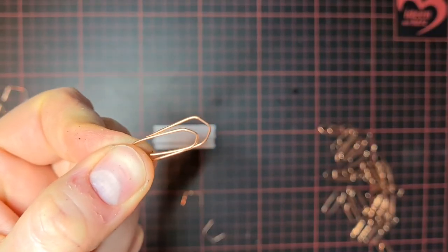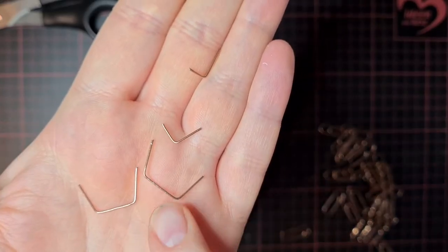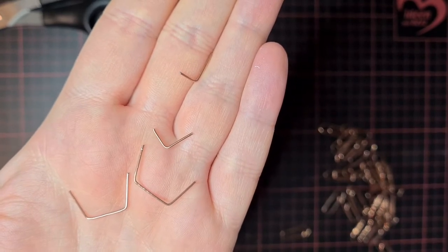Now exactly the same with the second paper clip, and make sure that the angles fit together. Now we have these four wire parts, and on to the gluing.